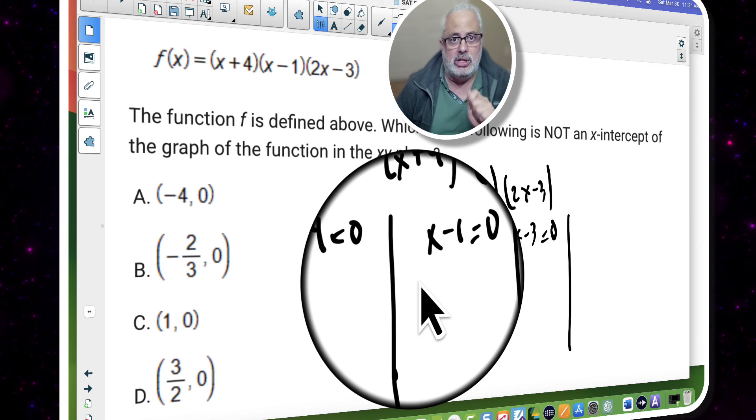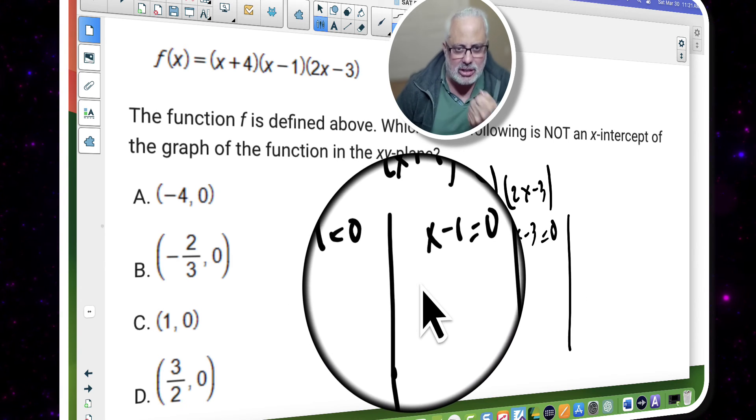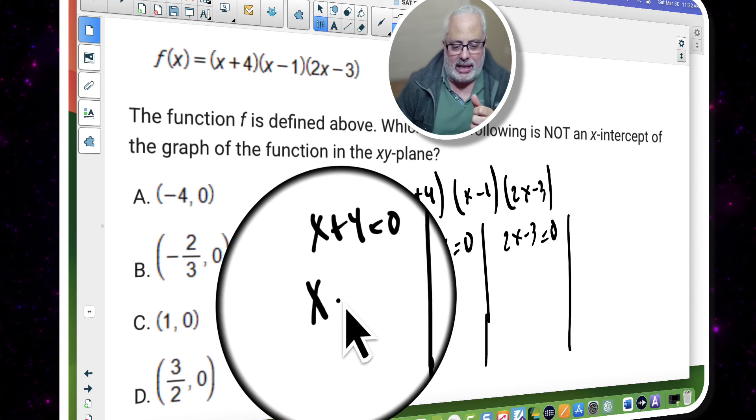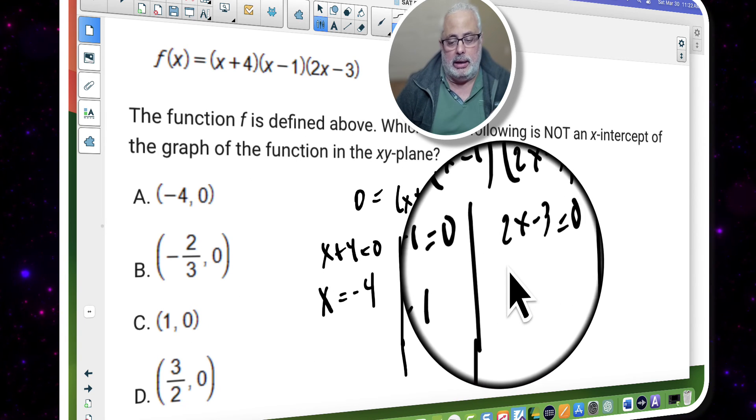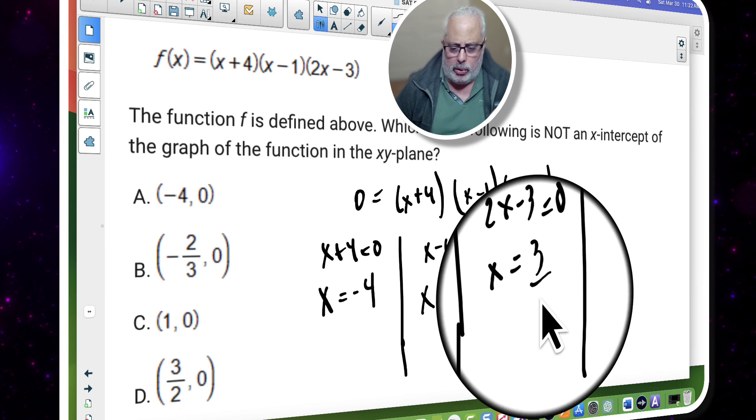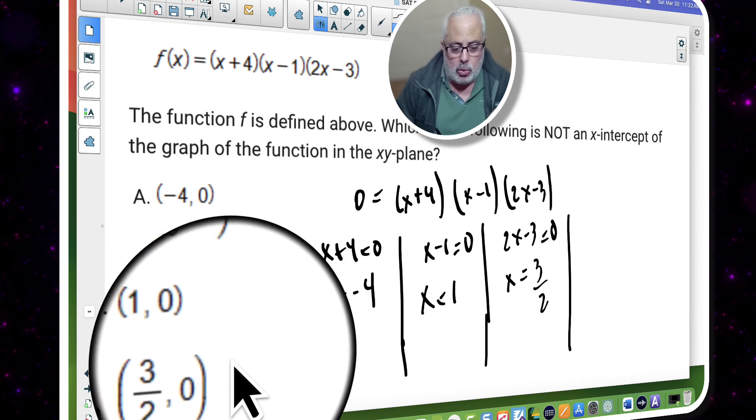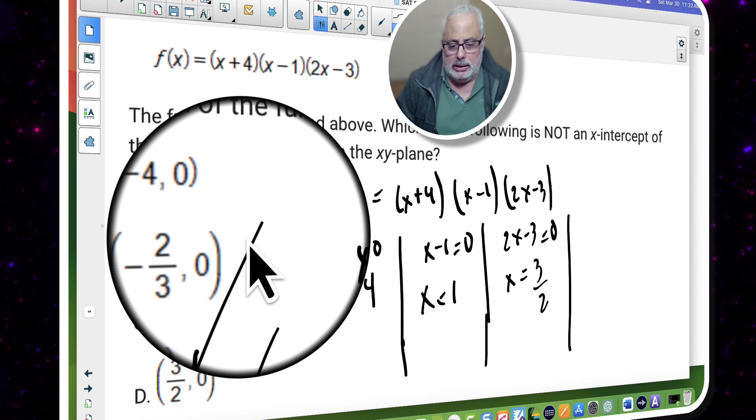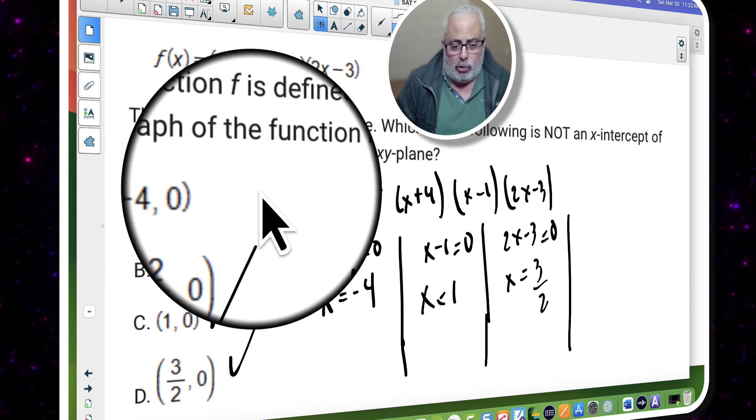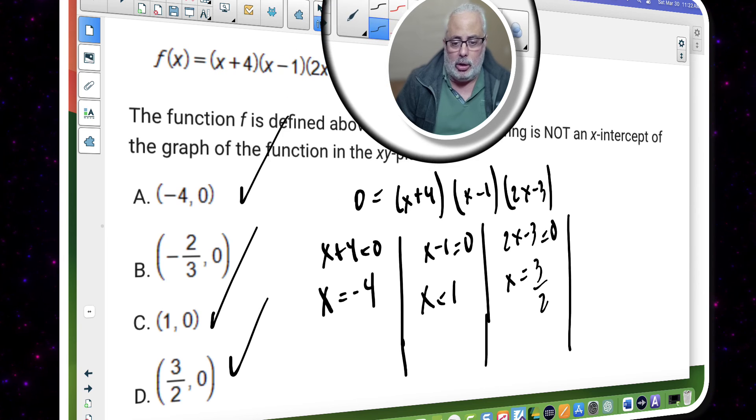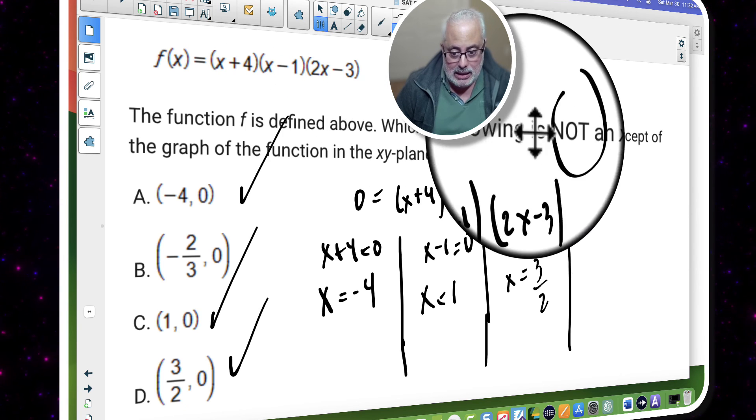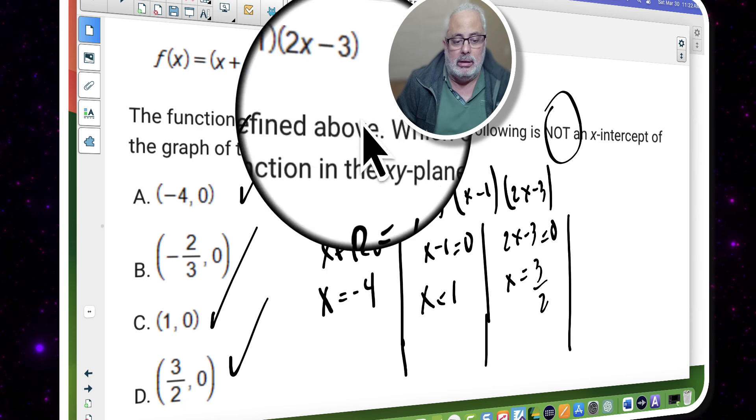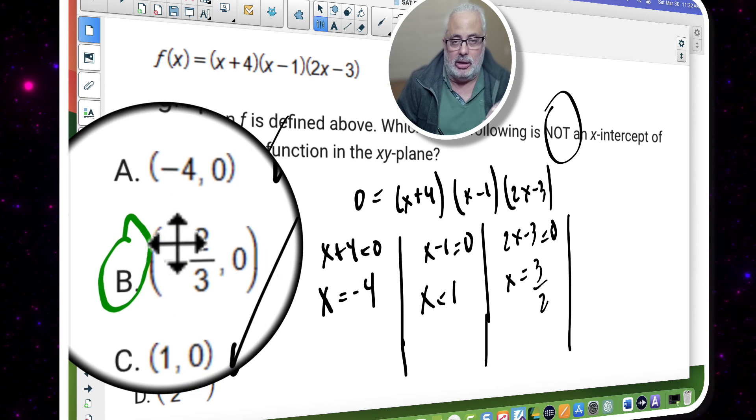That substitution is the verb. It's the action. So we have x equal negative four. We have x equal one, and we have x equal three over two. So three over two, I have it here. X equal one, I have it here. Negative four, I have it here. So the only one that is not the x-intercept is b. And b is the answer.